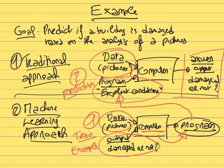Once you have the learned program, you provide new pictures of buildings the computer has never seen. Because it developed rules for recognizing damaged buildings from training examples, it uses those rules — its previous experience — to make predictions on the new photos.